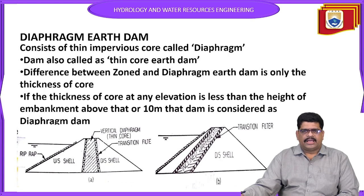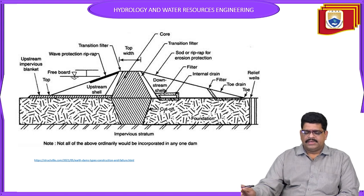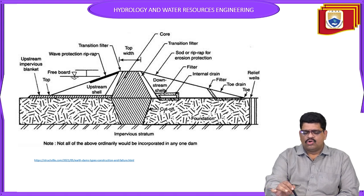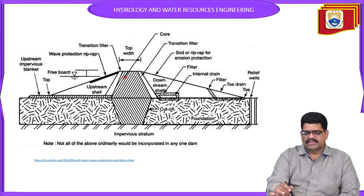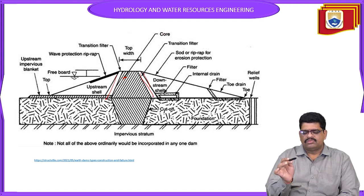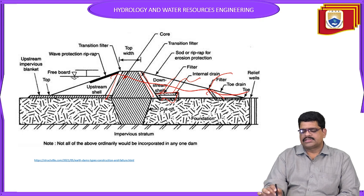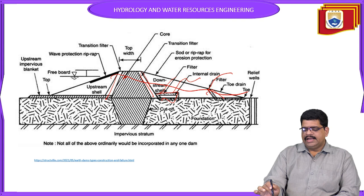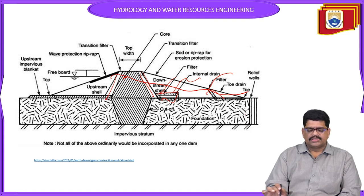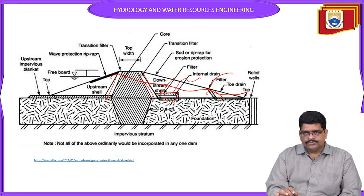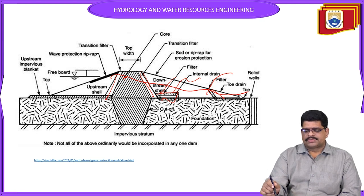Here is a major diagram showing the internal core. We can see the top width, the core at the center, transition filters provided on both upstream and downstream sides, filters in the sides, internal drainage, and filters on the downstream side through which water that enters can be removed. Relief wells can also be provided to protect the walls, along with upstream wave protection.